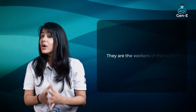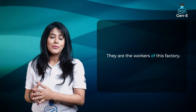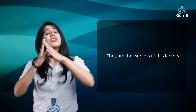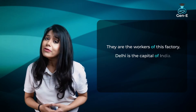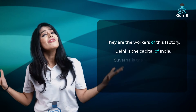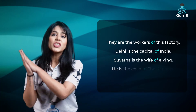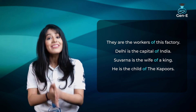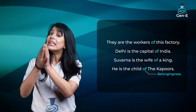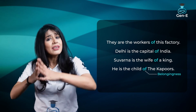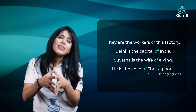But what is the meaning of the word 'of'? Of ka sab se basic function hai to show belongingness or possession. Jaise, 'They are the workers of this factory' — woh is factory ke workers hain, matlab is factory ko belong karte hain. 'Delhi is the capital of India.' 'Suvarna is the wife of a king.' 'He is the child of the Kapoors.' Teeno sentences mein 'of' belongingness dikha raha hai — Delhi India ki capital hai, Suvarna king ki wife hai, aur wo Kapoors ka beta hai.